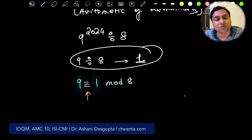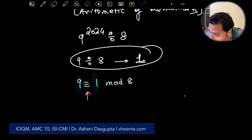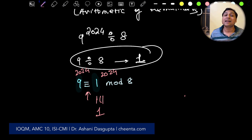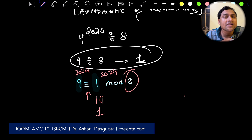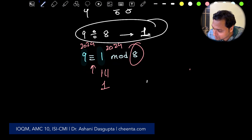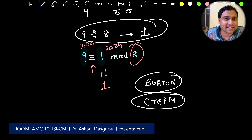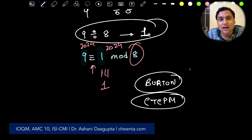One of the properties of congruences is that you can raise both sides to the same power. Since 1^2024 = 1, we get 9^2024 ≡ 1 (mod 8). This is a simple but illustrative example. For theory of congruences, Burton's Elementary Number Theory and Challenges and Thrills of Pre-College Mathematics (CTCPM) are both very good sources of problems.